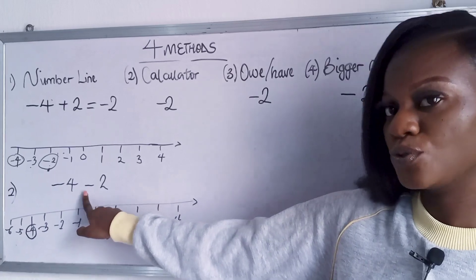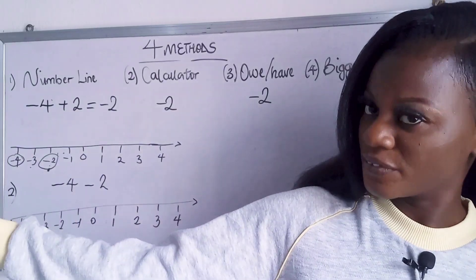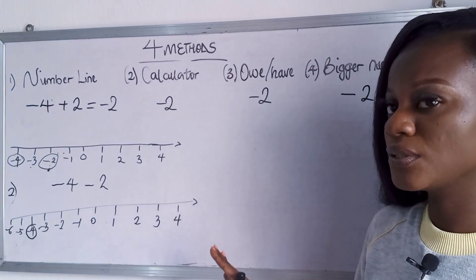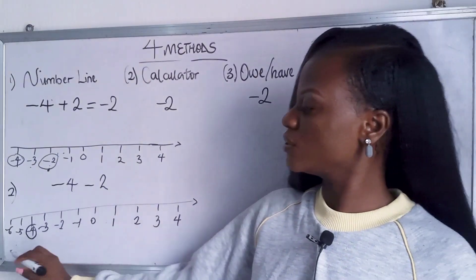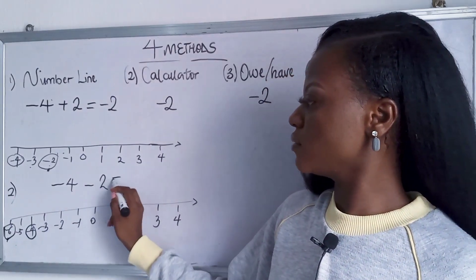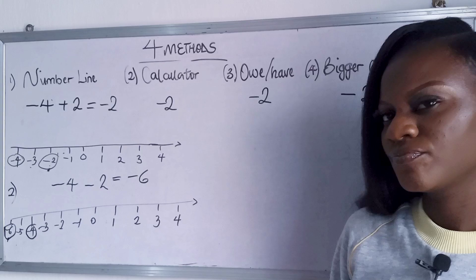So you go to look for minus four on your number line which is this. Now what does it say? Minus two. So we're going to the left because we're to subtract. We're not going to the right. Going to the right means you're going to have. So minus two. We're going to count two times to the left. One, two. Give us what? Minus six. Did you get that?